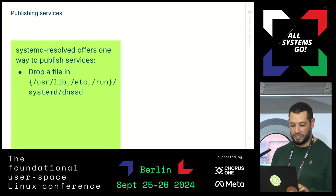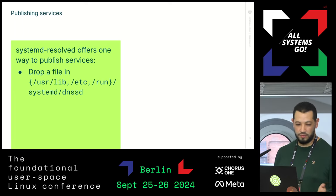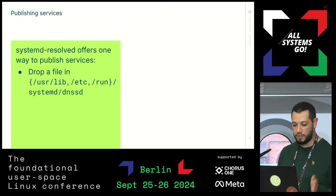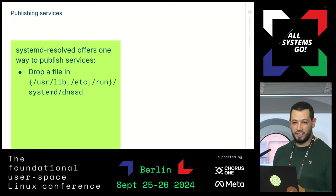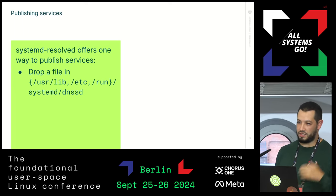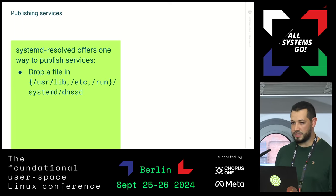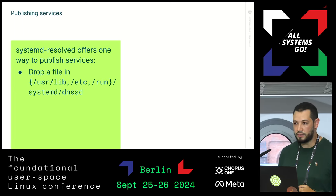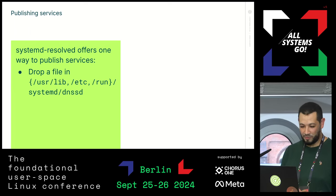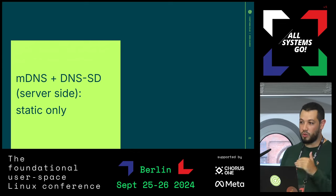With resolved, you can drop a file in /etc/systemd/dnssd, or in the other directories in the usual systemd manner — it can be in /usr/lib, /etc, or /run, depending on whether it's provided by the system, the administrator, or at runtime. But we don't have a D-Bus API. So we have this as a static-only thing.